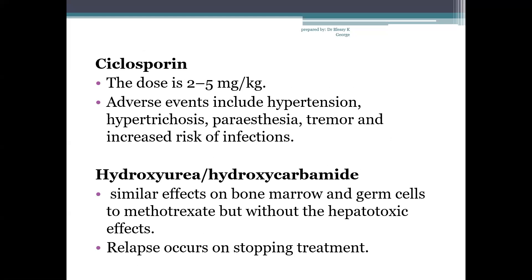Next is cyclosporine, an effective treatment for all variants of psoriasis. Treatment for more than one year is not advised due to renal nephrotoxicity; the dose is 2–5 mg/kg. Adverse events include hypertension, hypertrichosis (increased hair growth), paraesthesia (tingling or pricking sensation), tremor and increased risk of infections. Hydroxyurea or hydroxycarbamide has similar effects on bone marrow and germ cells to methotrexate but without the hepatotoxic effects, though relapse occurs on stopping the drug.